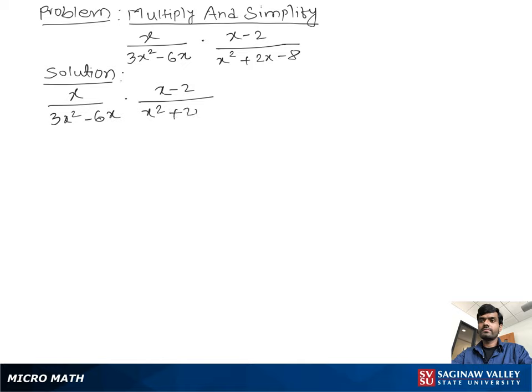Now we multiply top to top and bottom to bottom, so you can write x times x minus 2 over 3x² minus 6x times x² plus 2x minus 8. Now we do the factor at denominator.